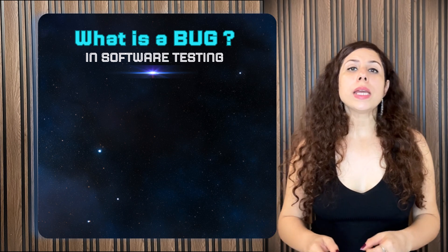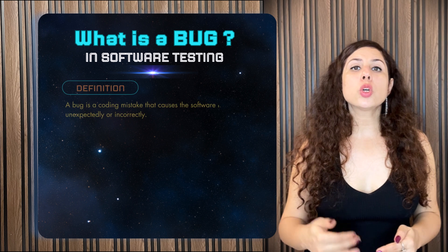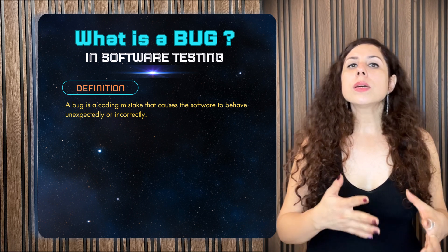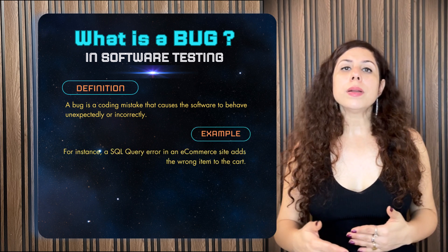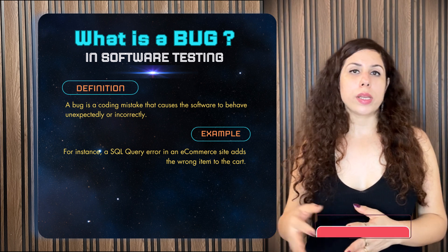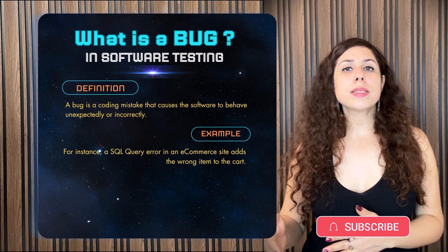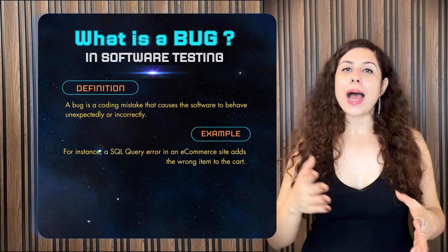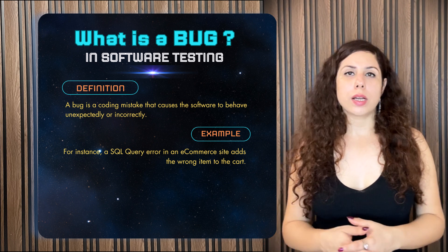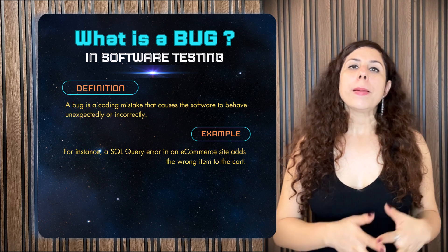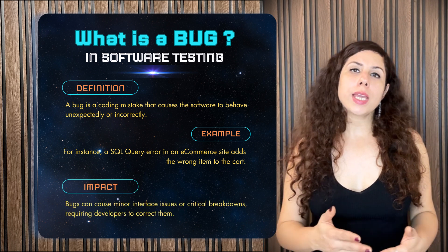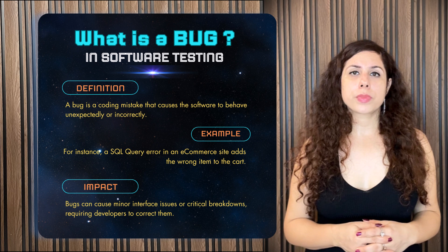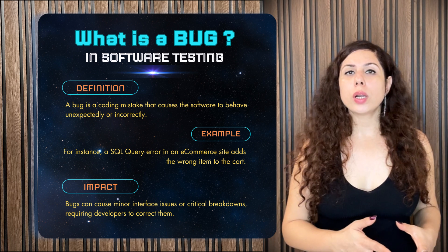What is a bug? In the world of software testing, a bug is a coding mistake that causes the software to behave in an unexpected manner. For example, in an e-commerce site, a programmer makes a mistake in an SQL query, so when a user presses the 'Add to Cart' button, the wrong query gets executed and the app adds the wrong item to the cart. This is called a bug — basically an error in the code which can range from minor interface issues to critical breakdowns.